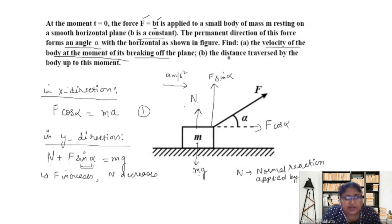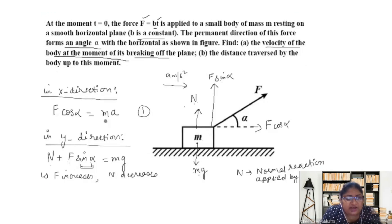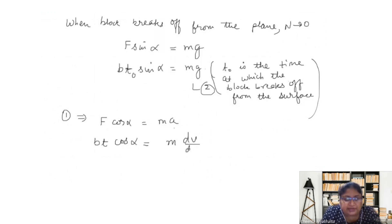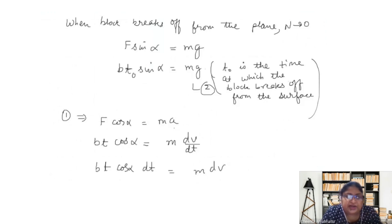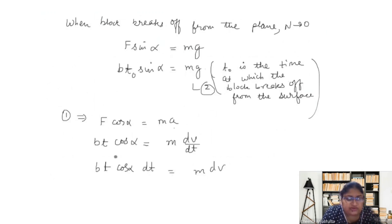Now considering Equation 1 to find the velocity: F cos alpha equals mass times acceleration. F is bt, so bt cos alpha equals m times dv/dt. Bringing dt to the left side and integrating both sides. b cos alpha is constant, so it comes out of the integral, leaving the integral of t dt on the left and m dv on the right.